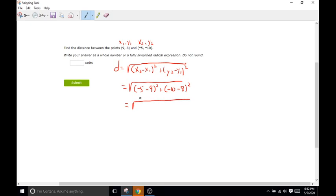Okay. Negative 5 minus 9 is negative 14. So negative 14 squared is going to be 196, positive 196. And then plus negative 10 minus 8 is going to be negative 18. So negative 18 squared or negative 18 times negative 18 is going to be positive 324. So when you add those together, you are going to get 520. So the square root of 520.